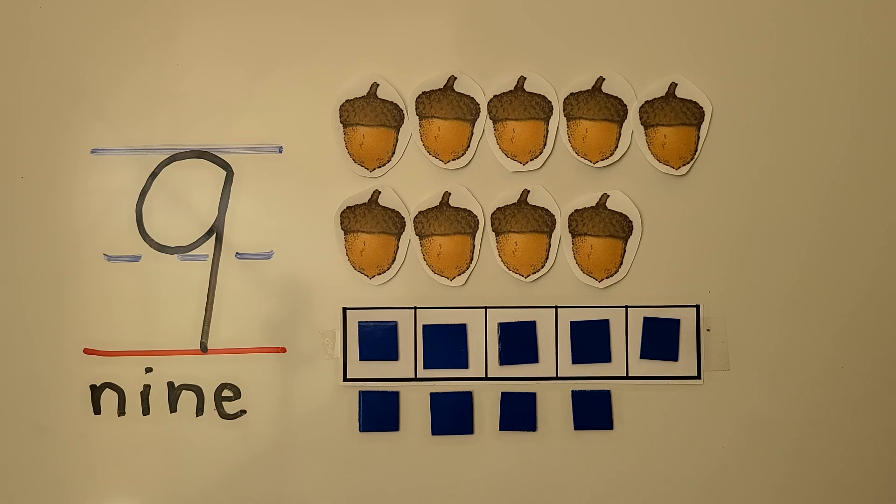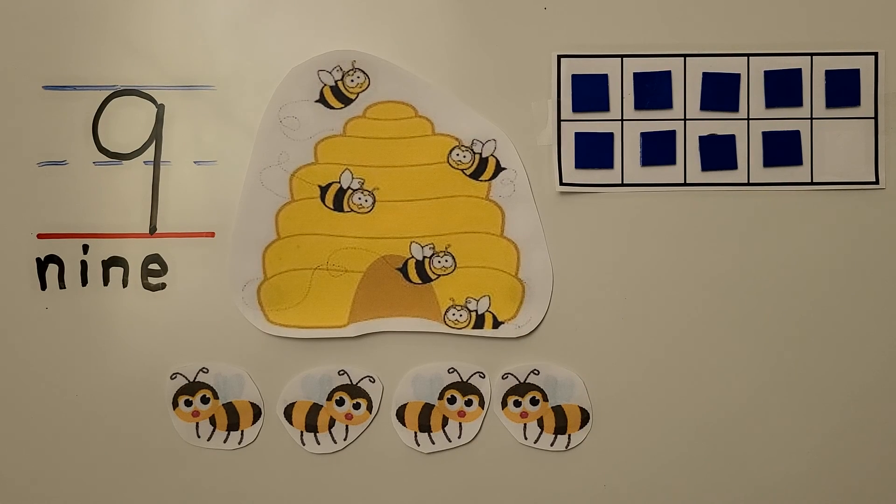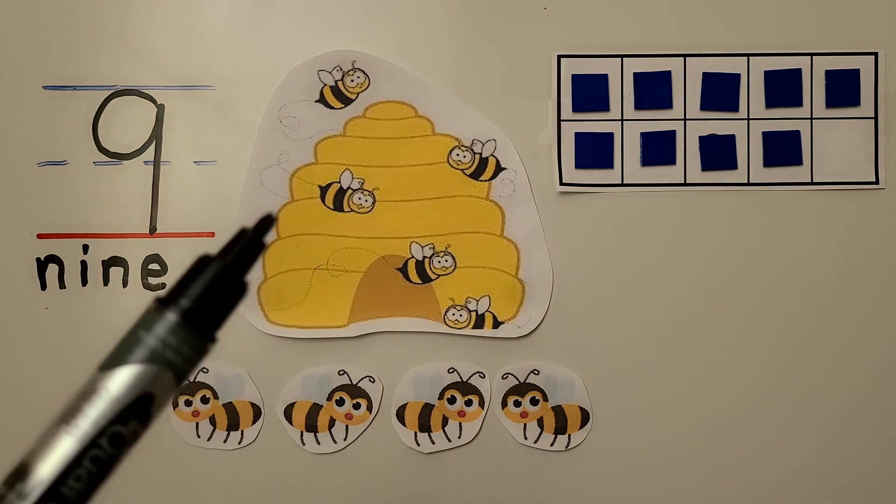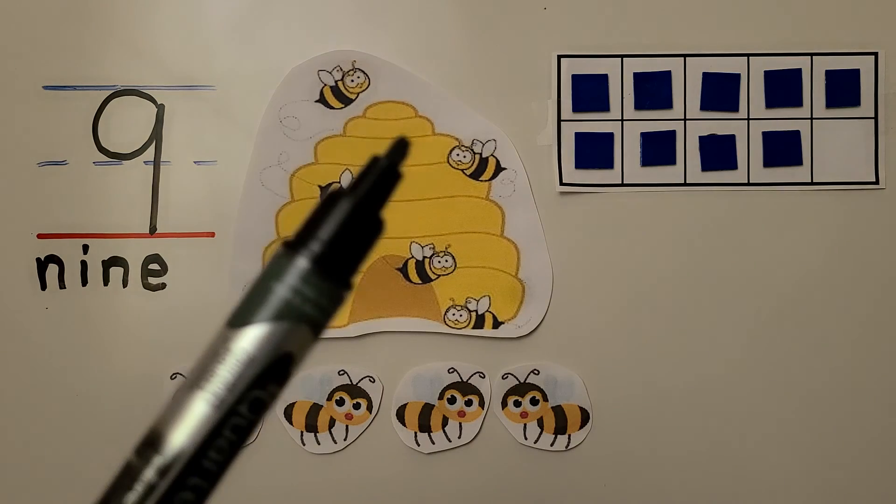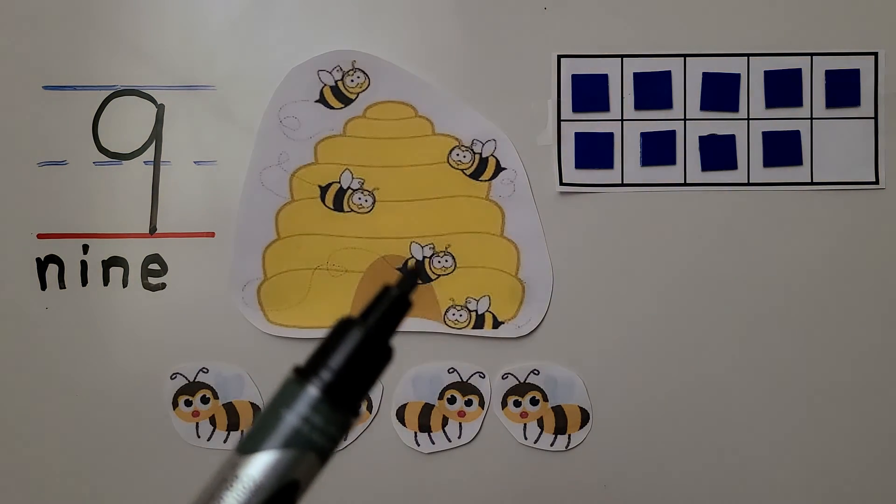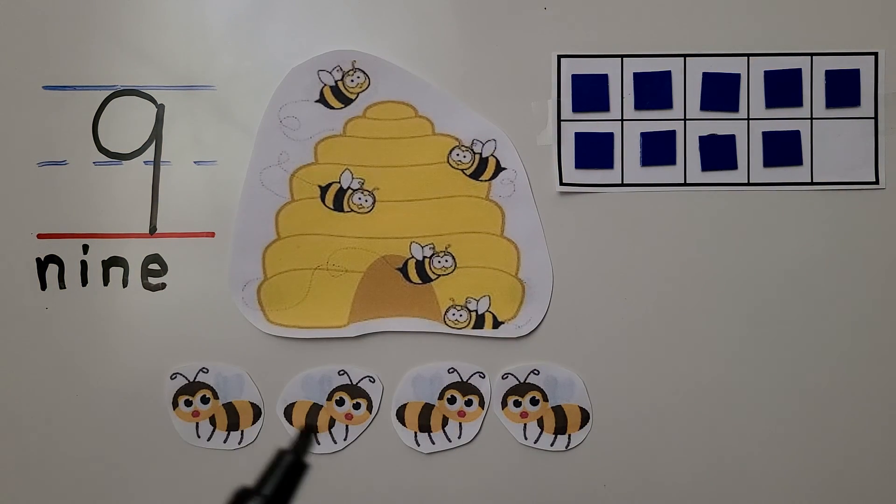9 is one more than 8, and 9 is the next greatest number after 8 in counting order. Here we have the number 9 again, and here we have the word 9.